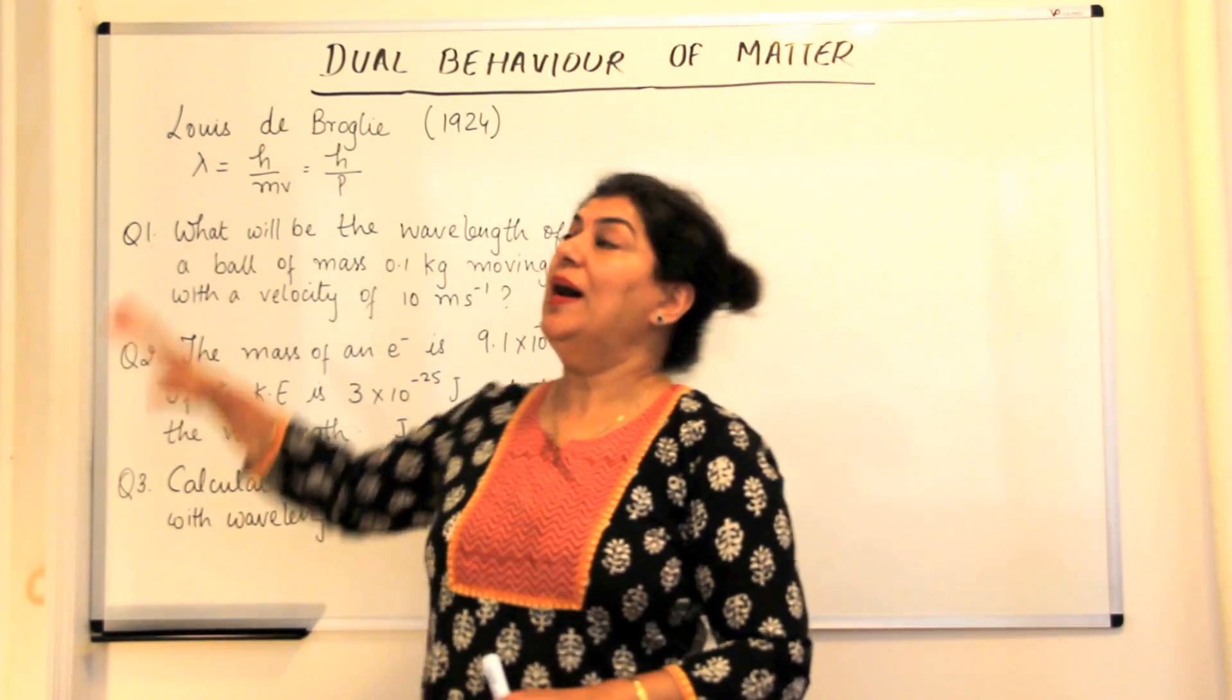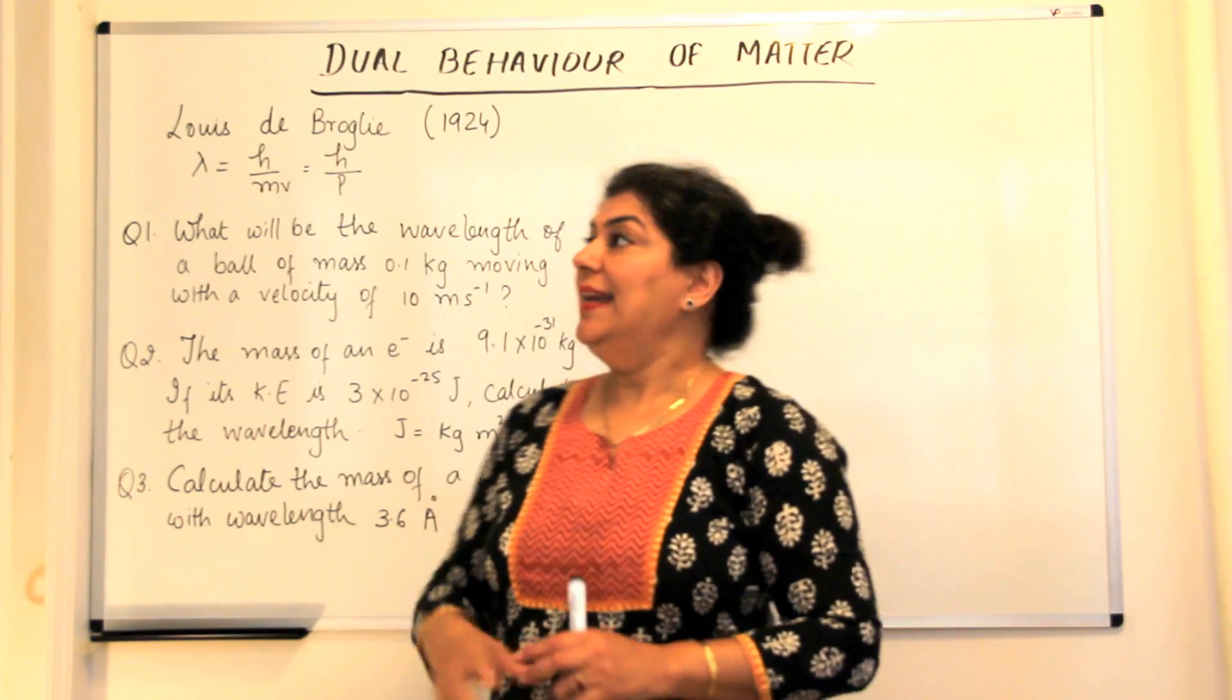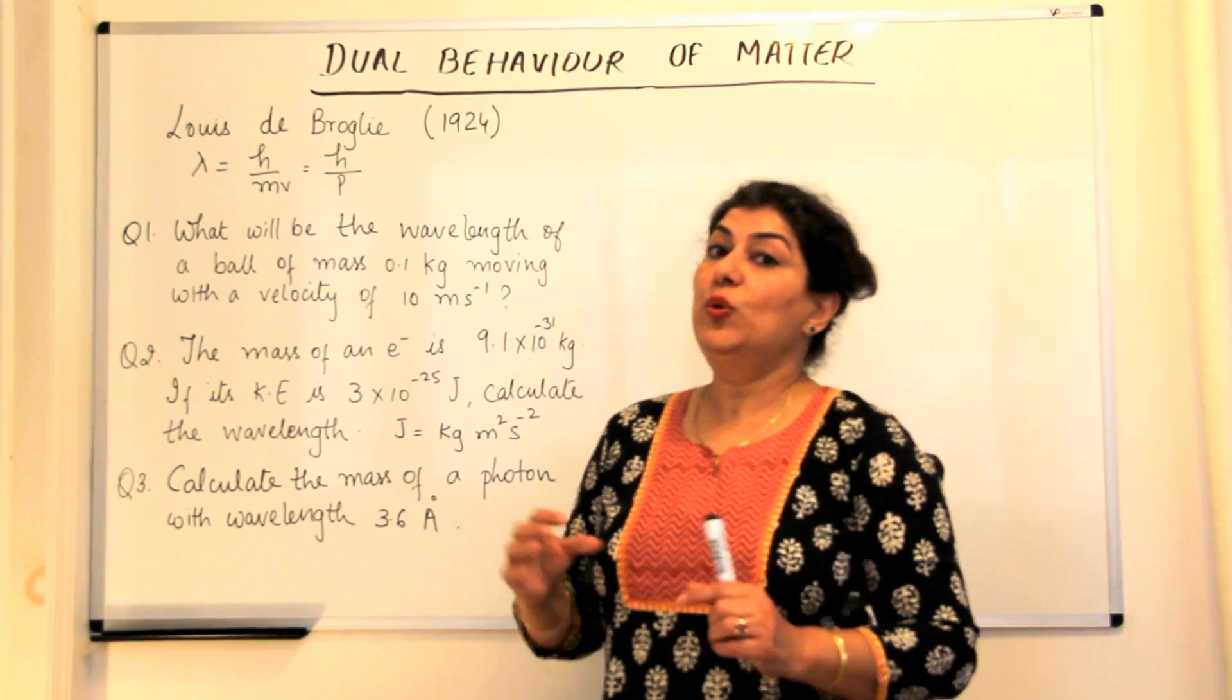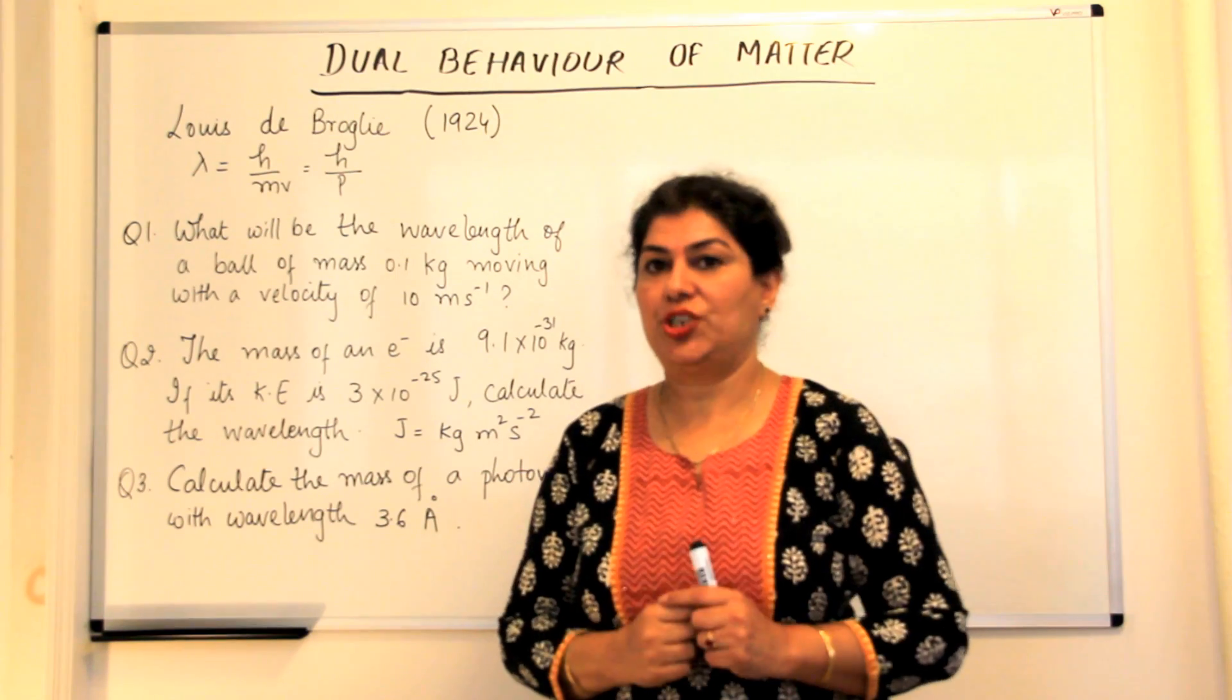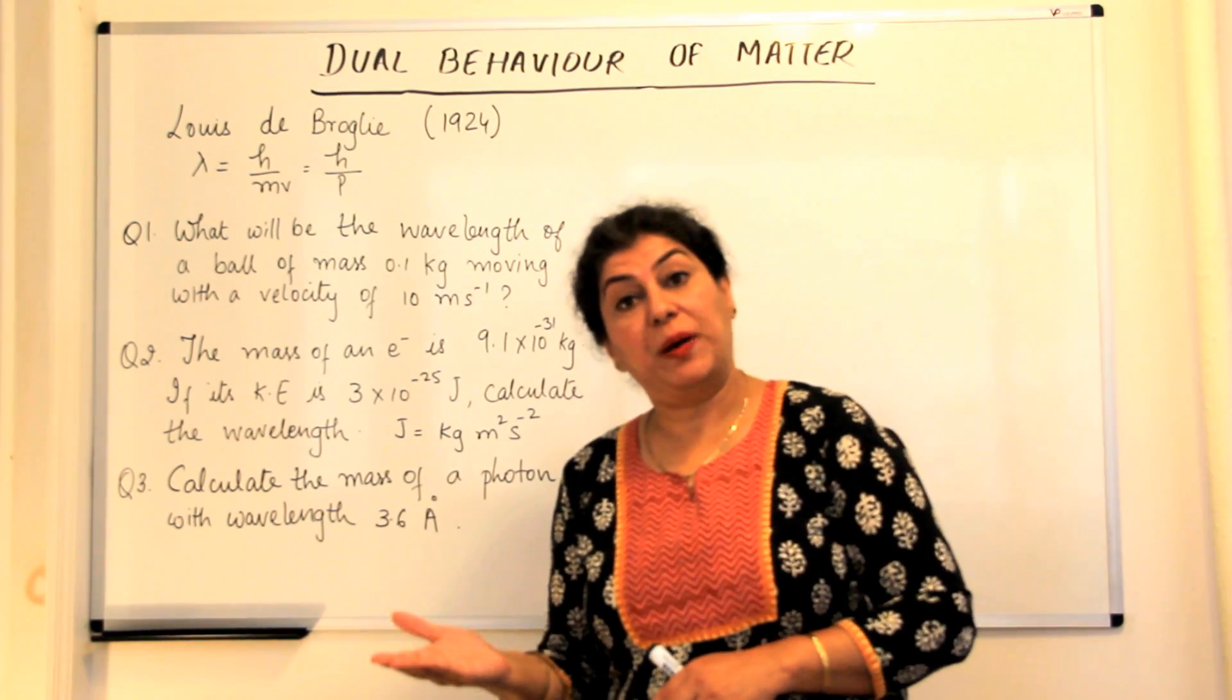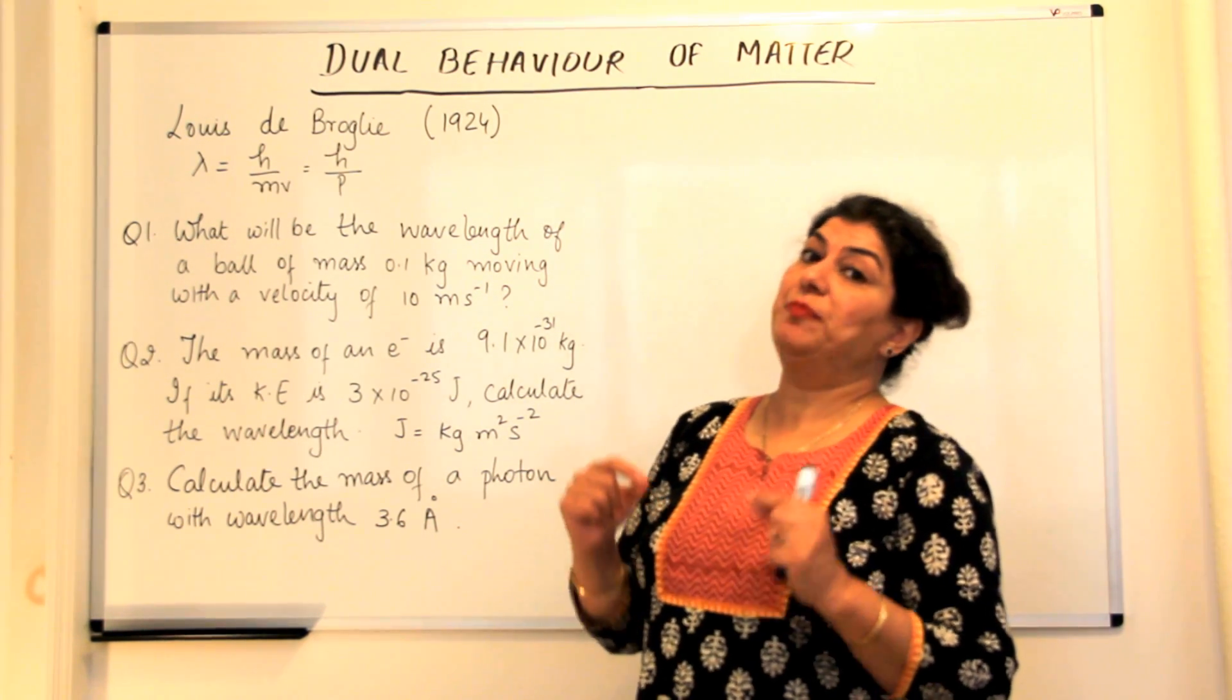Now for this and the next video I plan to explain the dual behavior of matter to you. In 1924 a French scientist Louis de Broglie said that just as electromagnetic radiations have dual nature, matter also has dual nature - that is both particle-like and wave-like nature.